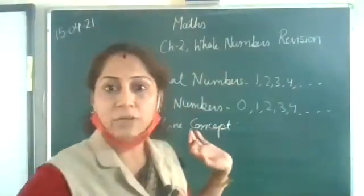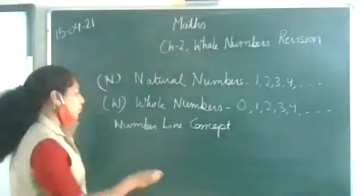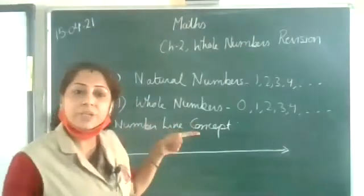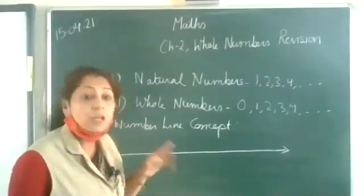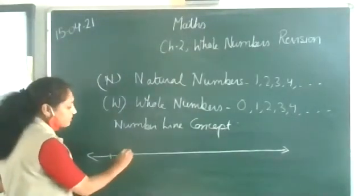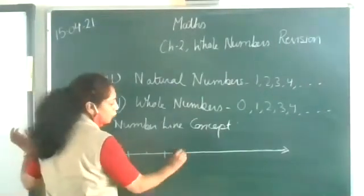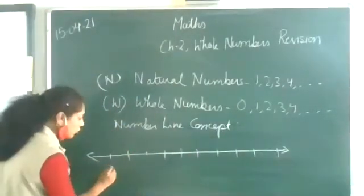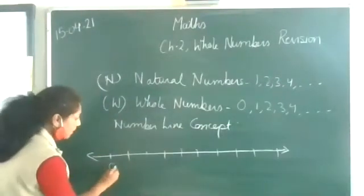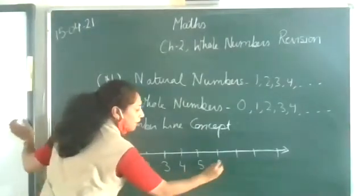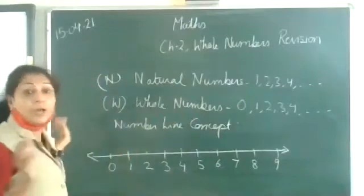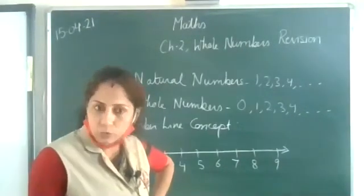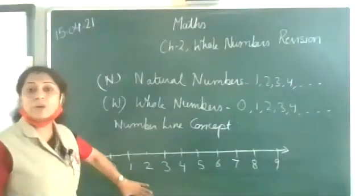All of you have scales. With the help of a scale you will draw a line. There is marking on the scale — on one side centimeters and the other side is inches. You will use the centimeter side, starting from one centimeter to centimeter. You will make a reasonable number line. Since we are going to represent whole numbers, we mark zero, one, two, three, four, five, six, seven, eight, nine and so on — because numbers are infinite. There is no ending to numbers. How many of you have understood this? Please give me the thumbs up.